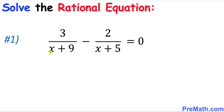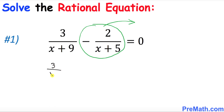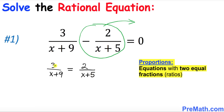Whenever you have two fractions in this kind of scenario, you move and rearrange terms. I want you to drag this equation on the right hand side, so this simply becomes 3 over x plus 9 equals to 2 over x plus 5, once we move the negative sign. This kind of scenario — one fraction on each side with an equal sign in between — is called a proportion.